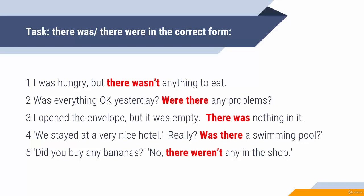Remember that in English you can't have a double negative. There was nothing — the word nothing gives the negative meaning to the whole sentence. You don't need to say there wasn't. If you say there wasn't, then you need the positive word: there wasn't anything in it. We stayed at a very nice hotel. Really? Was there a swimming pool? Swimming pool is singular, so you need was there. Did you buy any bananas? No, there weren't any in the shop. Bananas is plural, so you need the plural form: there weren't.